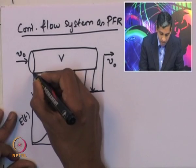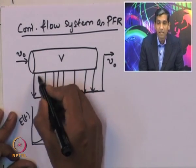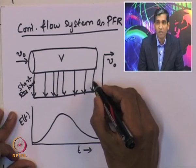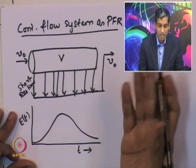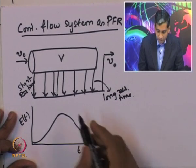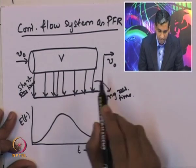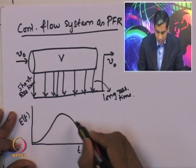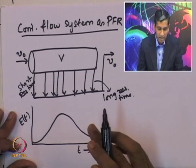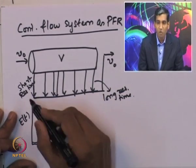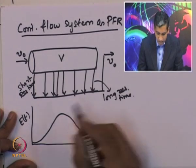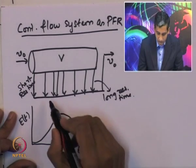The fluid withdrawn right at the entry location has the shortest residence time, while that withdrawn at the other end has the longest residence time. We remove batches of fluid from different locations, and the location is specified by the residence time distribution function E(t) measured experimentally. Because we withdraw from the side, there is no interchange of molecules between globules inside the reactor, and each globule can be considered as a batch reactor.